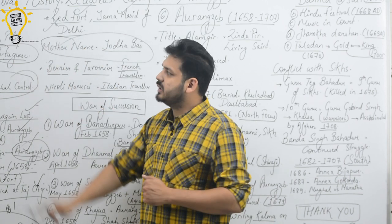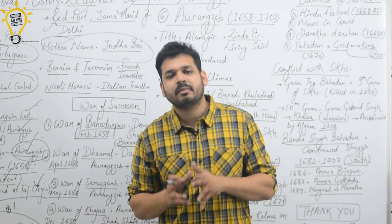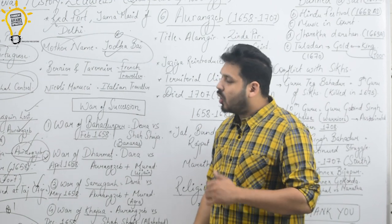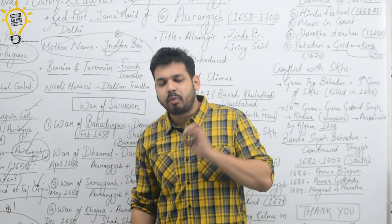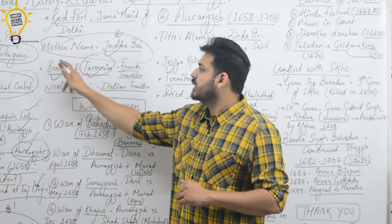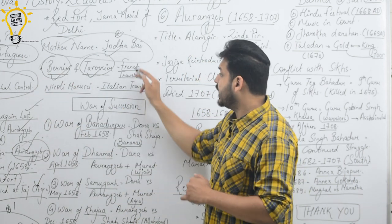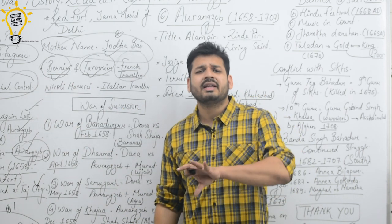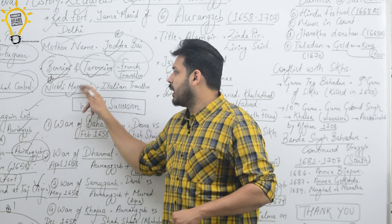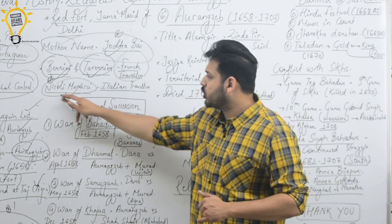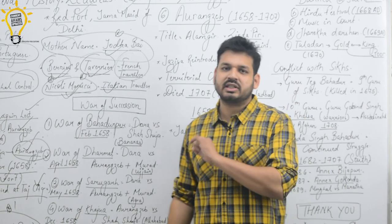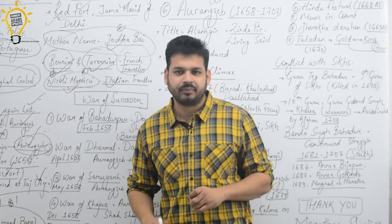Shah Jahan's mother's name was Jagat Gosain, also known as Jodha Bai. In the time of Shah Jahan, there were some important travelers you have to remember. Bernier and Tavernier were French travelers who came during Shah Jahan's time. Niccolao Manucci was an Italian traveler who also visited at the time of Shah Jahan.